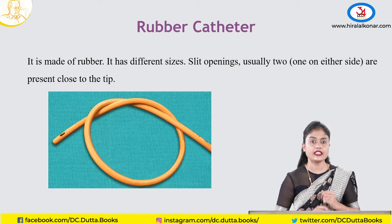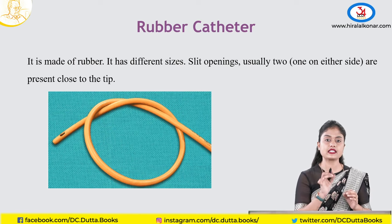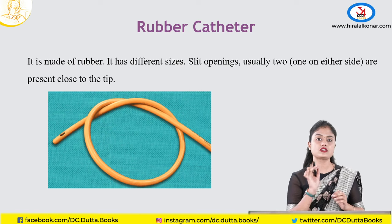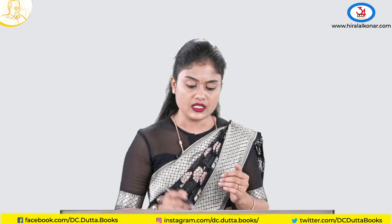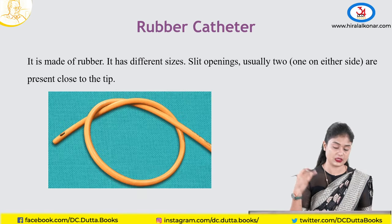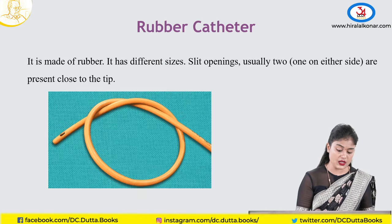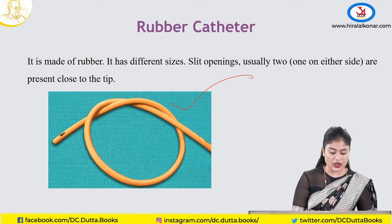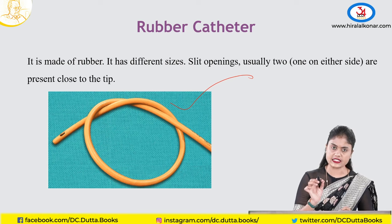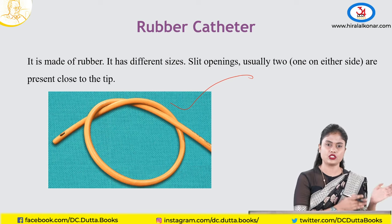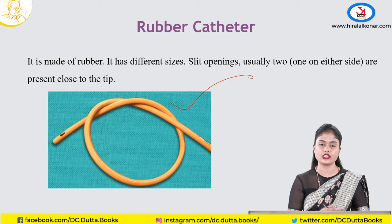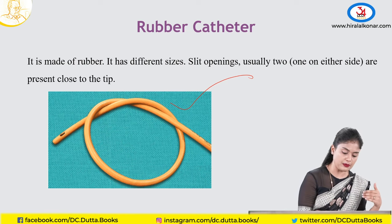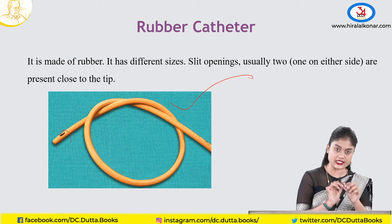Coming to the instruments, let us start with the basic beginning where we want to drain the bladder. Mostly used in previous days was the rubber catheter. It is of different sizes — 6, 4, 12 French, 14 French, 16 French. Smaller the number, smaller is the tip of the catheter size.